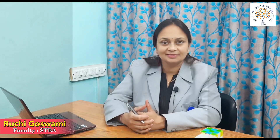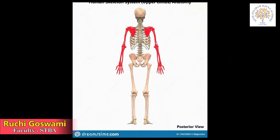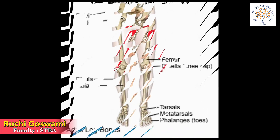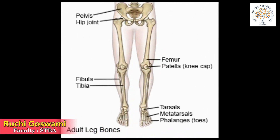Now let's move to the next topic — limbs. We have a pair of upper limbs or arms and lower limbs or legs. The arms have long bones — the humerus in the upper arm, and the radius and ulna in the lower arm. The wrist has eight bones, the palm five, and the fingers 14. You can count the bones and joints in your fingers.